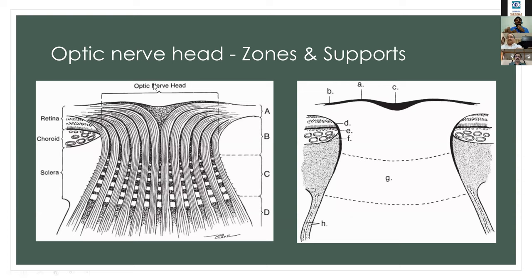Looking at the optic nerve head zones in cross-section, they are divided anatomically into the surface layer of the optic nerve head, the pre-laminar part, the retinal part, the laminar cribrosal part — also called the laminar part — and the retro-laminar part. The supports of the optic nerve head are mostly the astroglial cells.